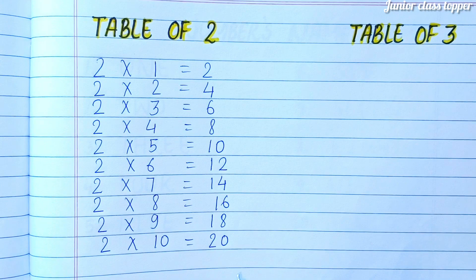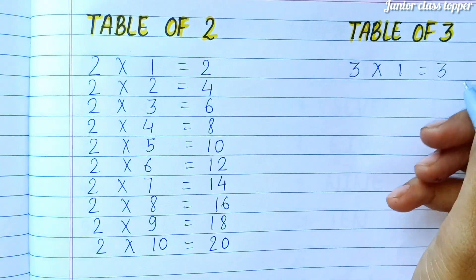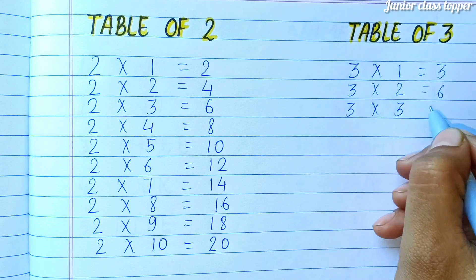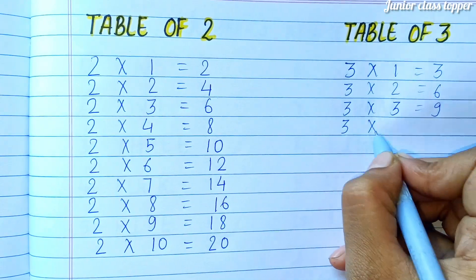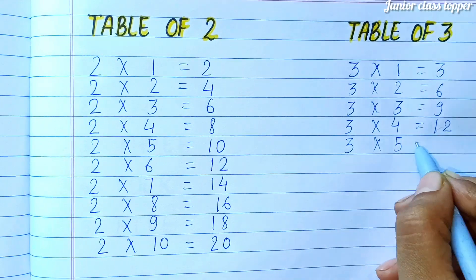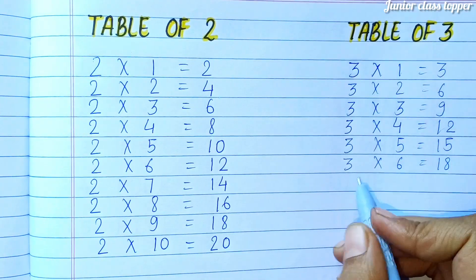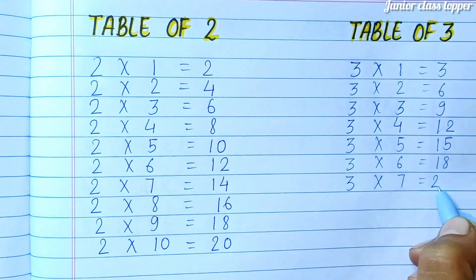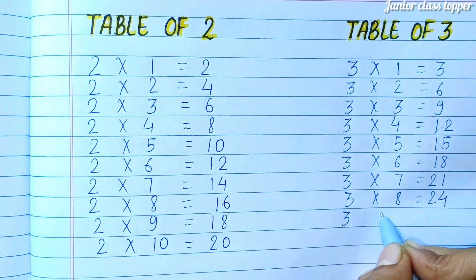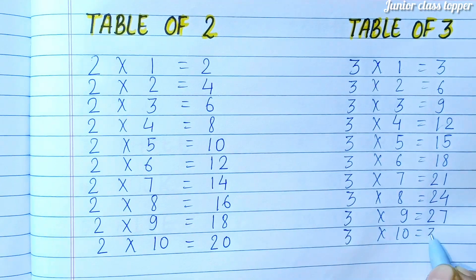Table of Three. Three ones are three. Three twos are six. Three threes are nine. Three fours are twelve. Three fives are fifteen. Three six are eighteen. Three sevens are twenty-one. Three eights are twenty-four. Three nines are twenty-seven. Three tens are thirty.